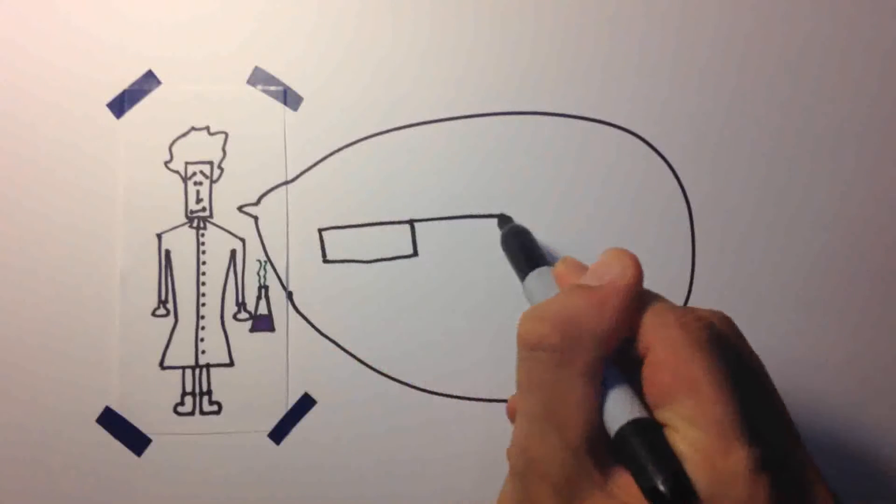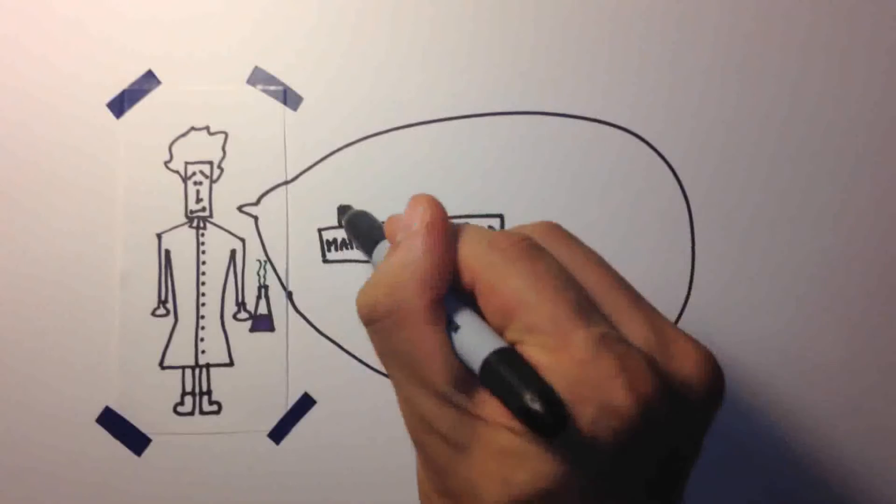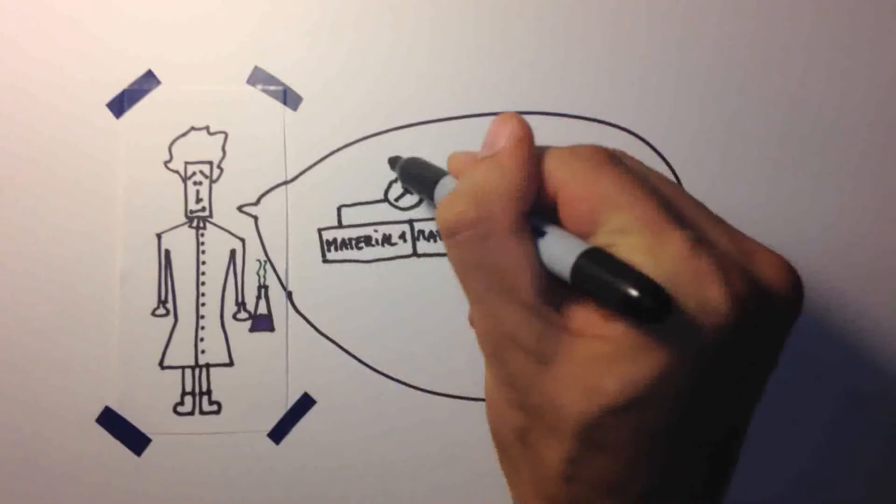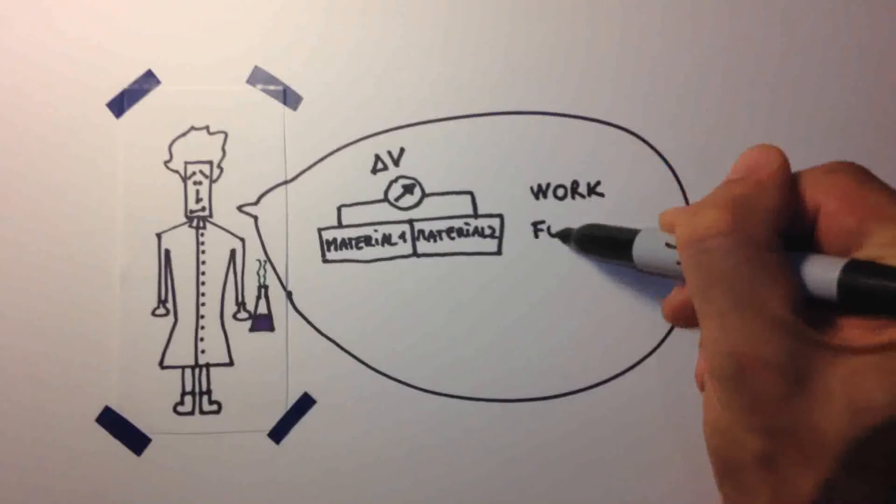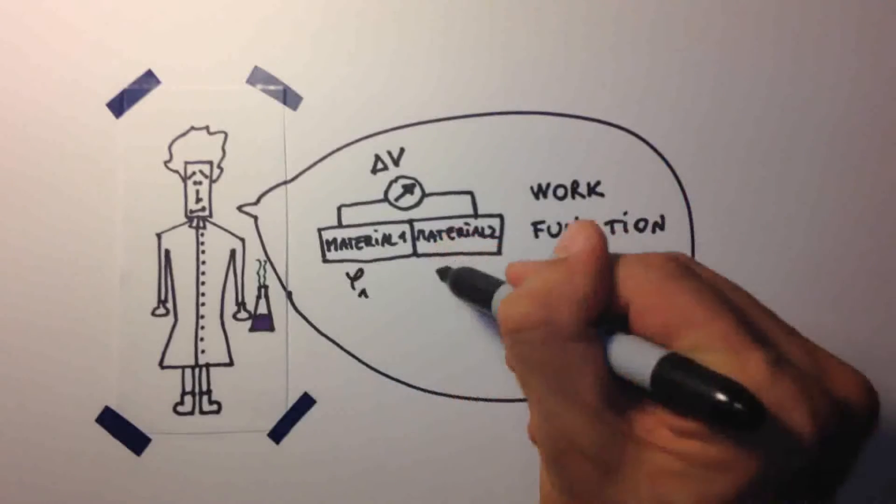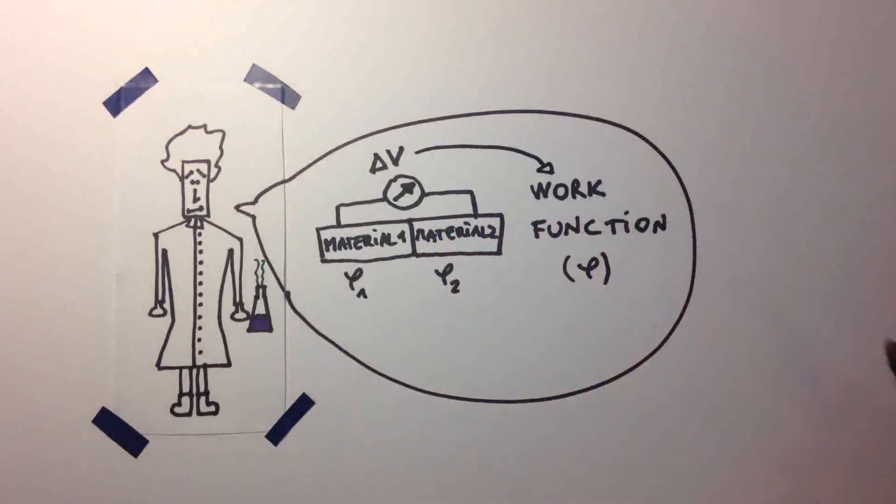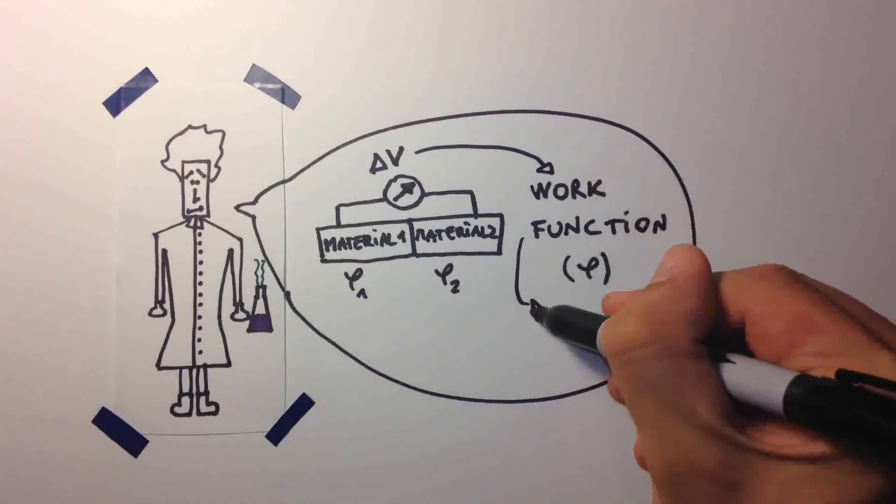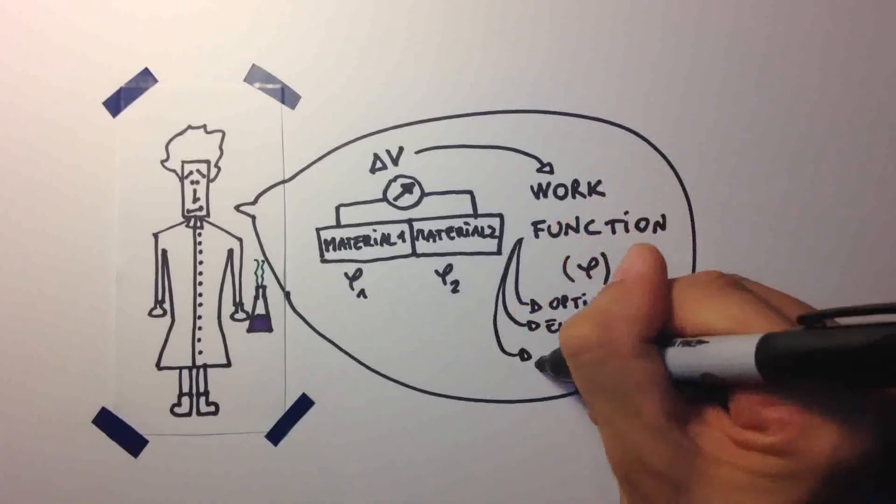Over a century ago, Lord Kelvin proved that a potential is generated between two conductors when they are brought into contact. This contact potential difference depends on the work function of the materials being used. The work function is the amount of energy needed to release electrons from a material surface and it's related to the materials optical, electrical, and mechanical properties.